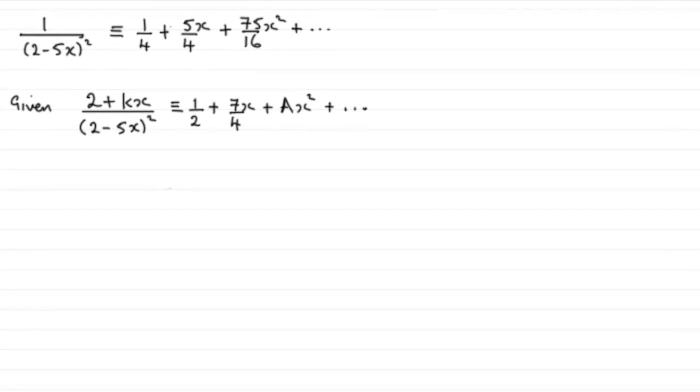Now, in the last two parts of this question, we're given that the binomial expansion of this fraction here is identical to half plus 7x over 4 plus ax squared, and so on. And what we've got to do is find the values of these two constants, k and a. Now, to do something like this, this is about comparing coefficients.